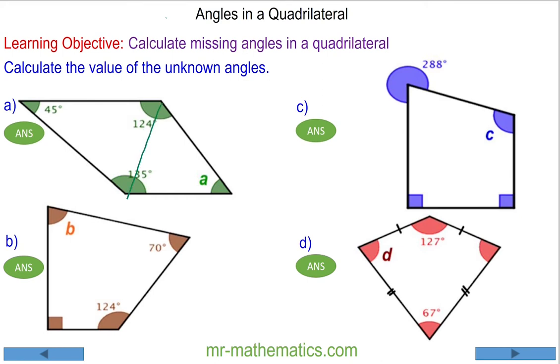This is because any quadrilateral can be made into two triangles, and we know that each triangle has 180 degrees. We have two lots of 180, which is 360. So all the angles in the quadrilateral add up to 360 degrees.